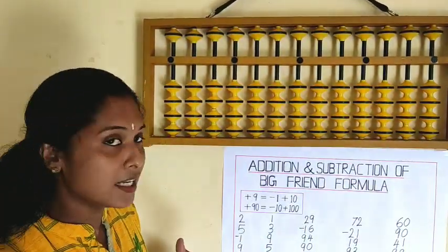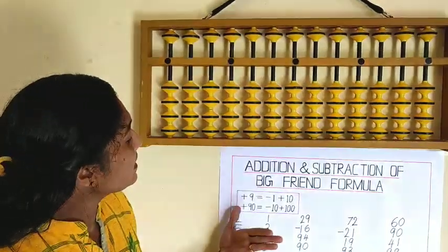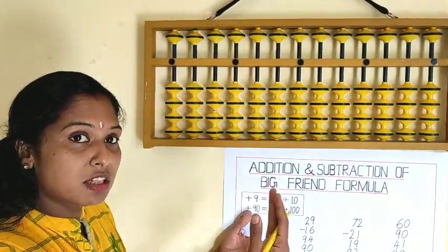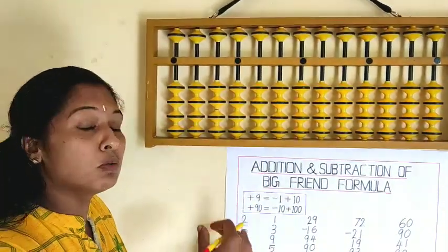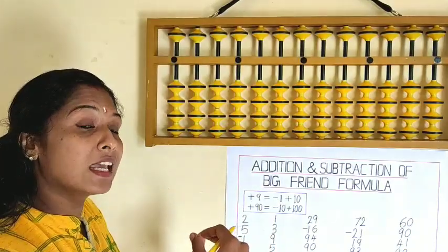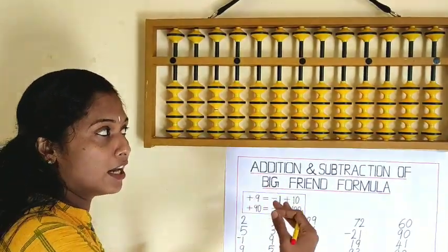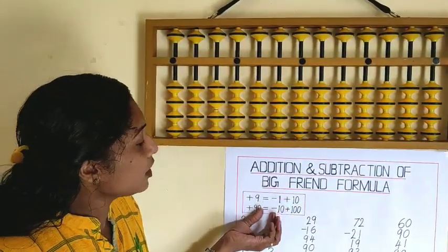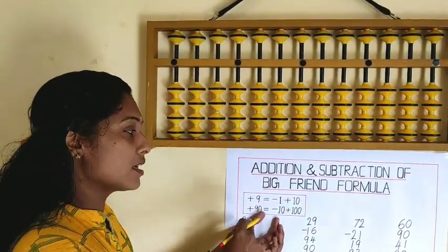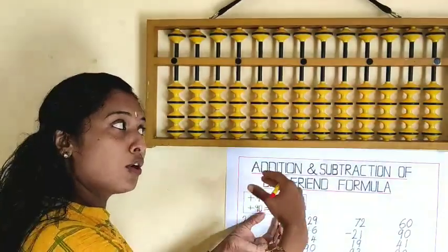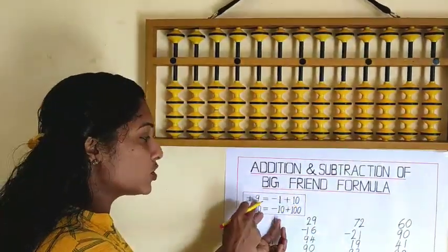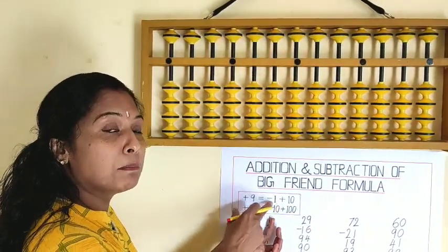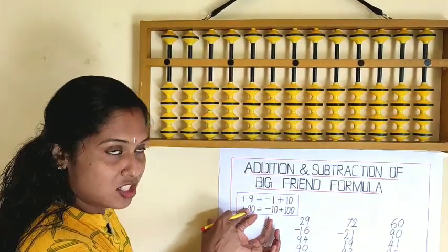Then it stands plus 90. If you want to add 90, what will we do? Minus 10 plus 100. So today we are going to do sums by using plus 9 and plus 90.